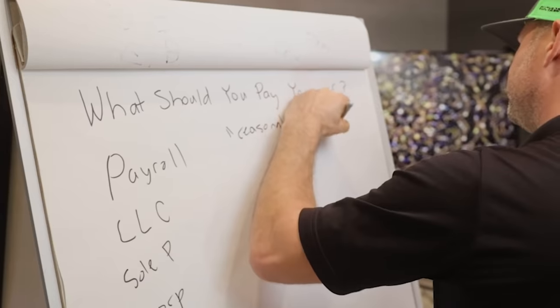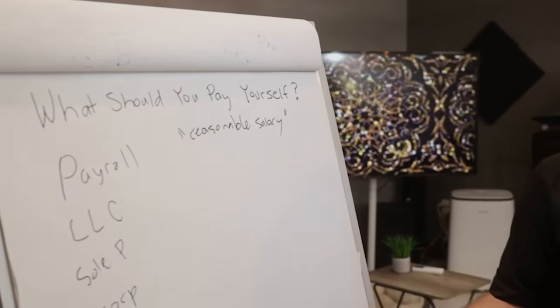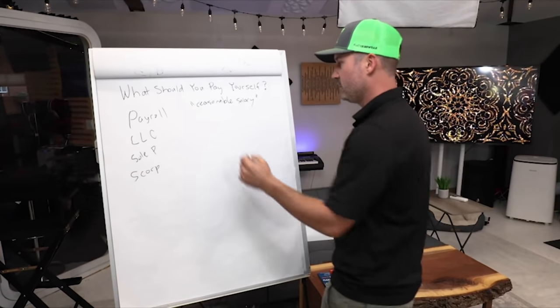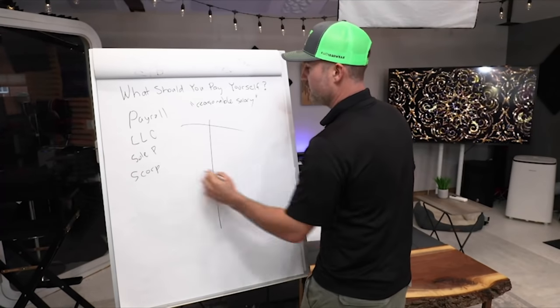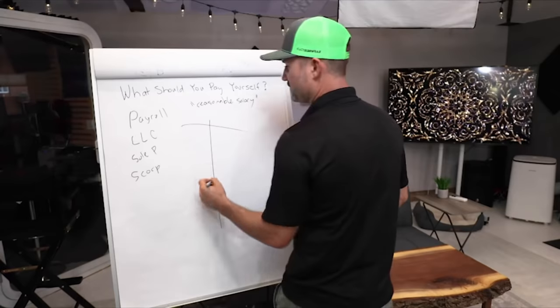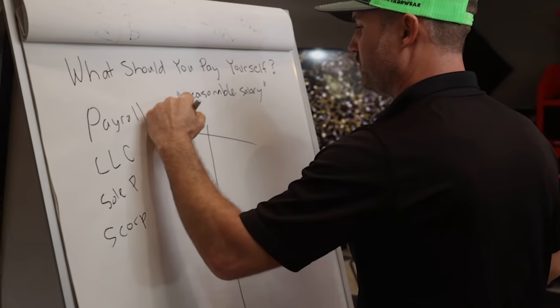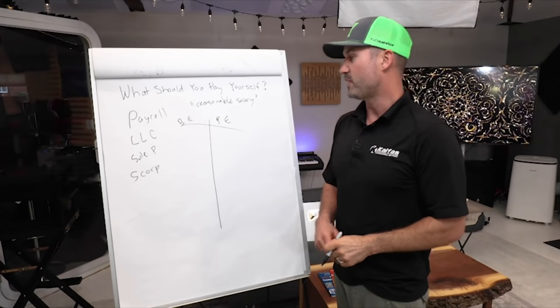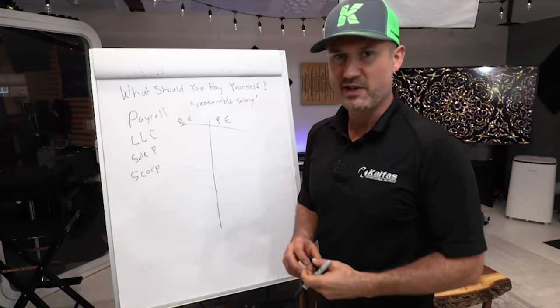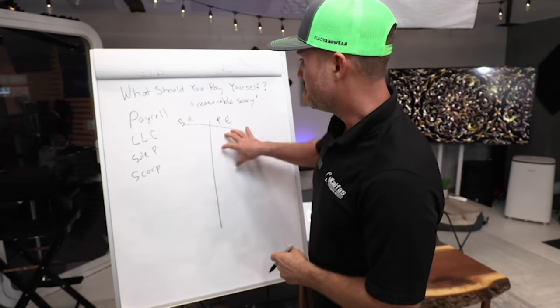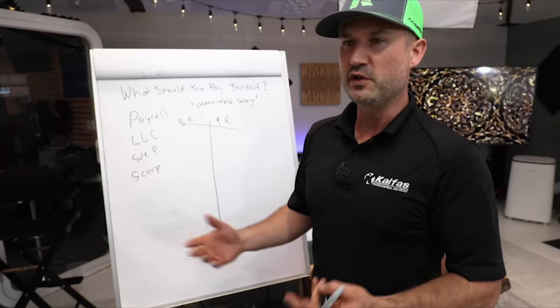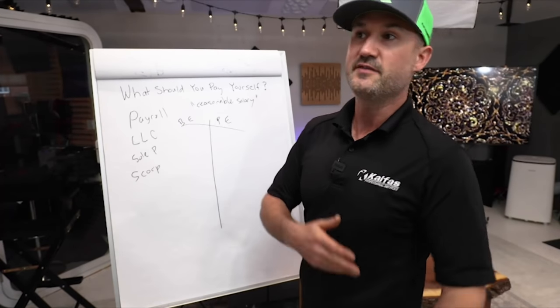Here's one thing that you could do: you could create your business expenses, we'll just call it BE, and then your personal expenses PE. Some of your personal expenses will actually turn into business expenses as you get going, like your vehicle and your phone and a portion thereof.